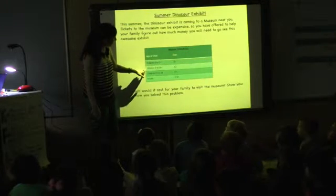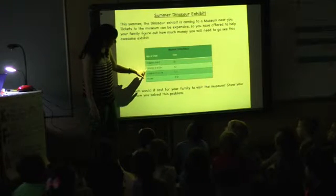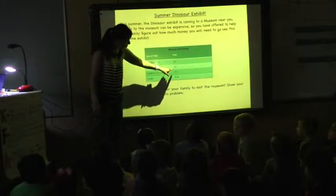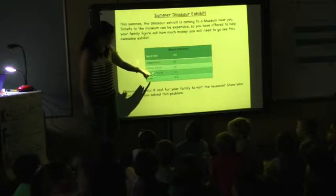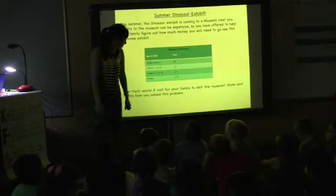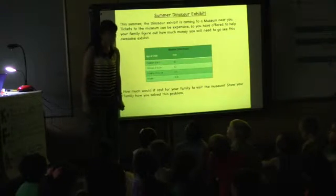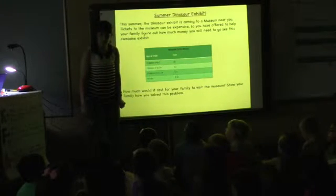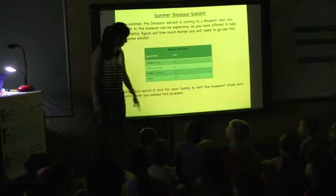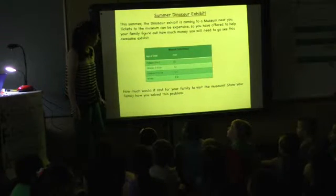Children three to ten will be two dollars. Children eleven to eighteen will be five dollars. And then adults will be ten dollars.